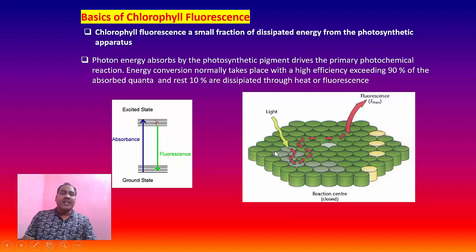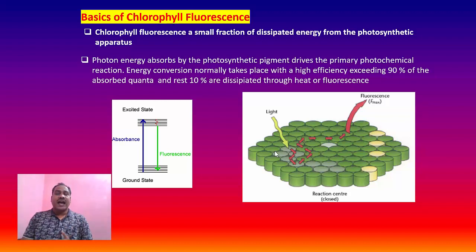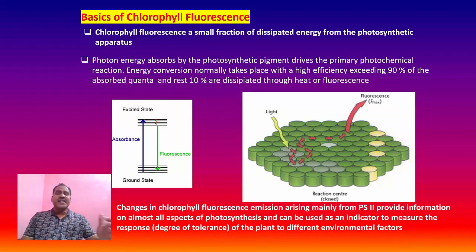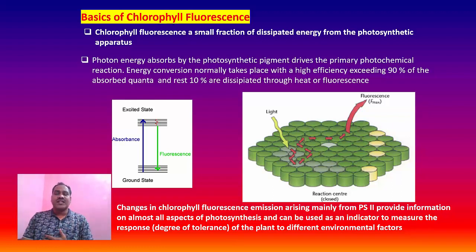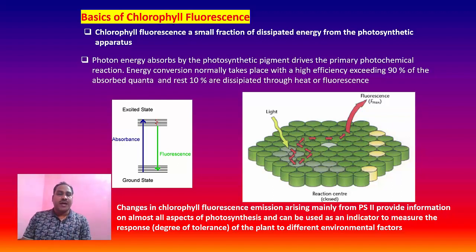Generally, photon energy absorbed by the photosynthetic pigment drives the photochemical reactions. Normally, energy conversion takes place for about 90% of the absorbed quanta, and 10% is dissipated through heat and fluorescence. This change in chlorophyll fluorescence emission from the photosystem reflects almost all aspects of photosynthesis and can be used as an indicator to measure the response of photosynthesis with respect to different types of environmental parameters.